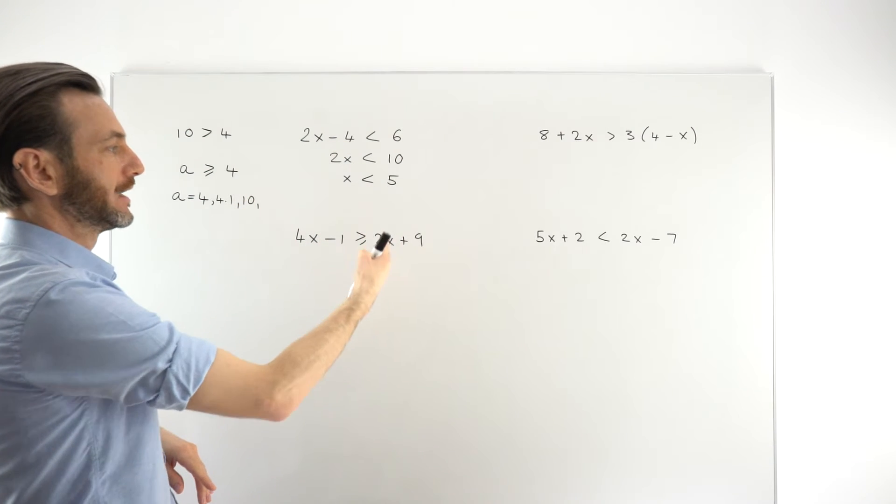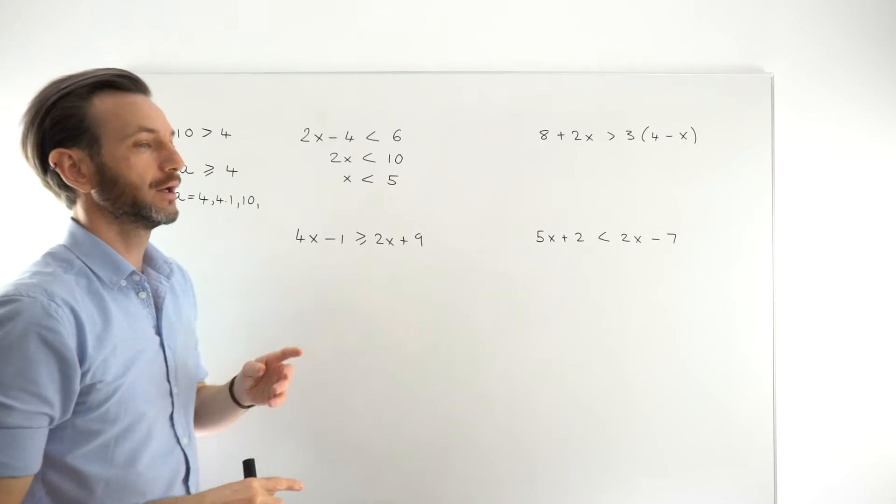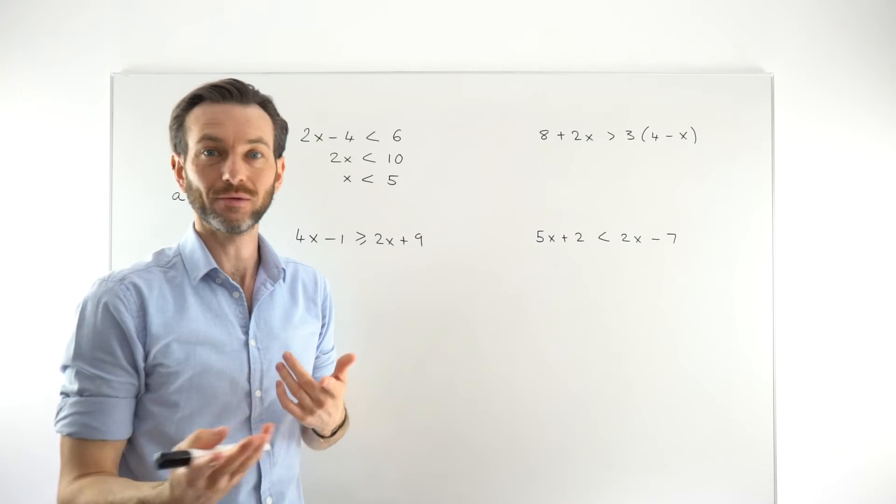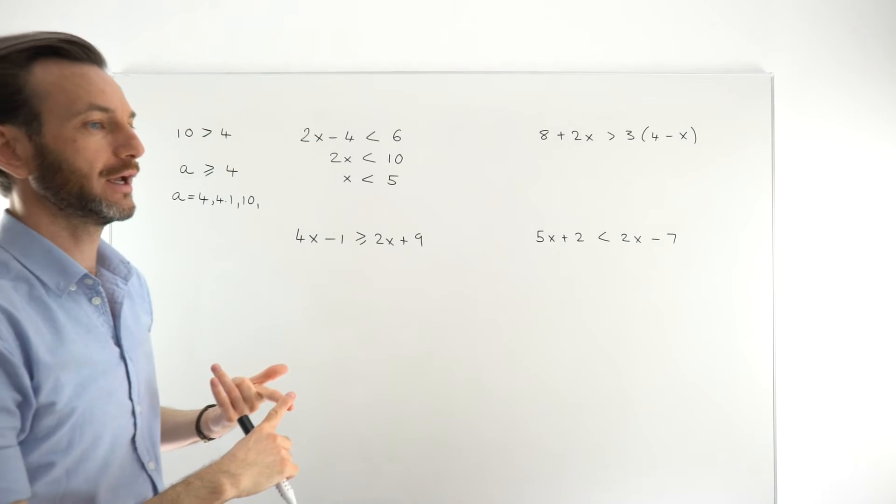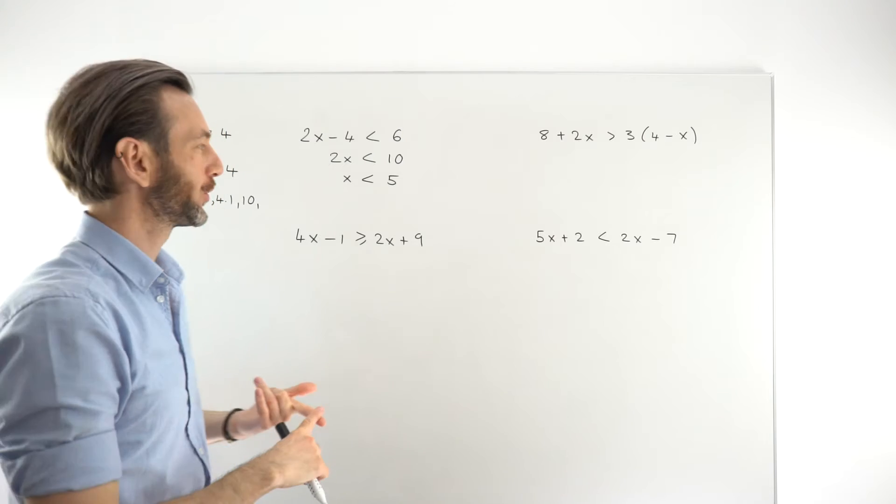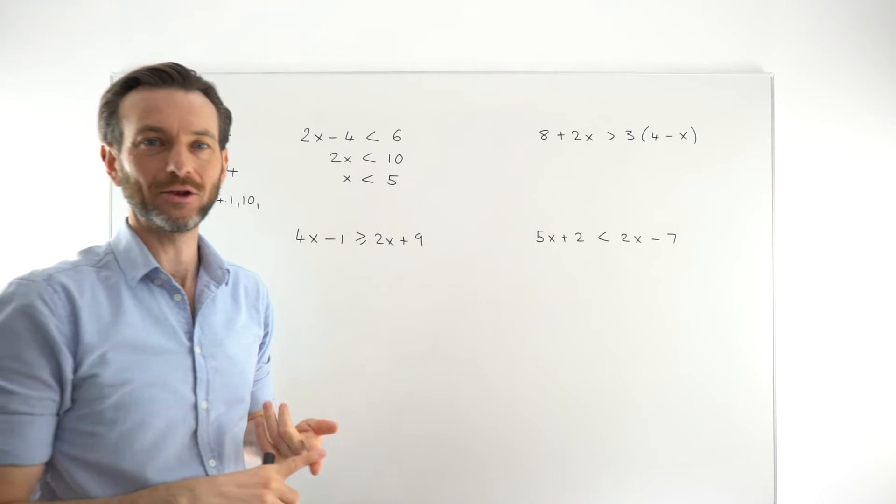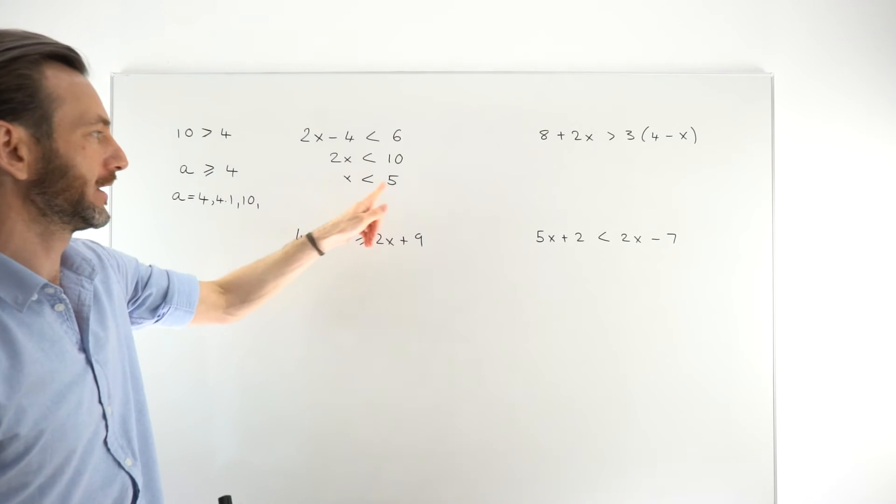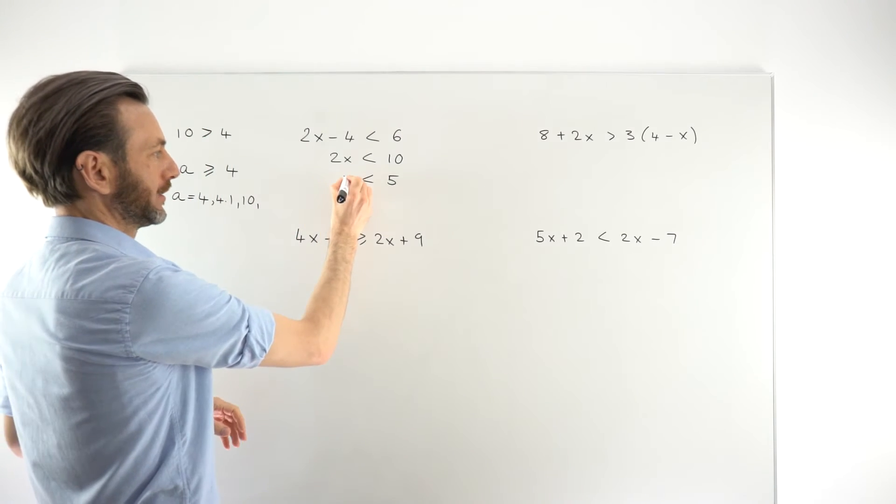But this is saying that x is any number strictly less than 5, so it could be 4.9, it doesn't have to be a whole number, it could be 4.99, it could be 2, it could be minus 10, it could be minus a million. Any number less than 5 meets that criteria.